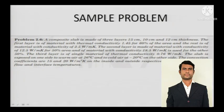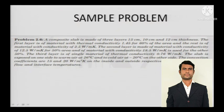A composite slab is made up of three layers: 15 centimeters, 10 centimeters, and 12 centimeters thickness. The first layer has material with thermal conductivity 1.45 watts per meter Kelvin for 60 percent of the area, and the rest is material with conductivity 2.5 watts per meter Kelvin. The second layer is made of material with conductivity 12.5 watts per meter Kelvin for 50 percent of the area.